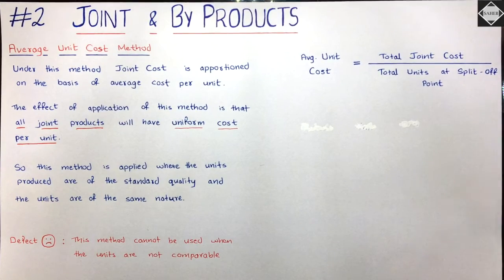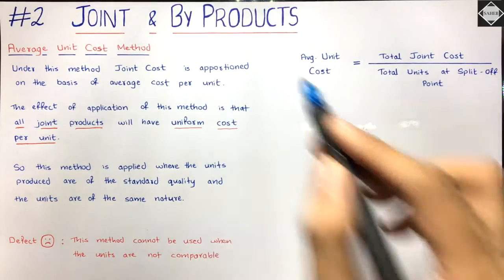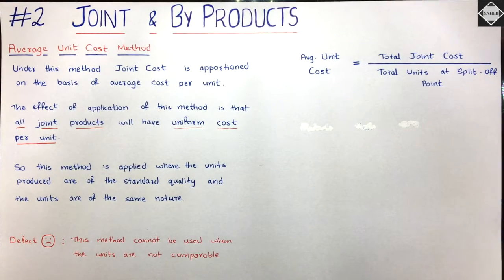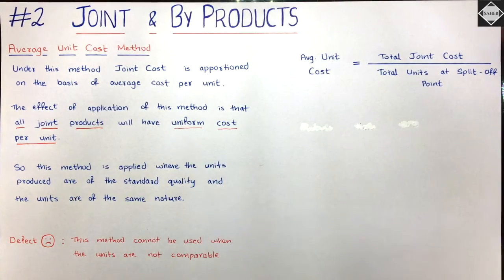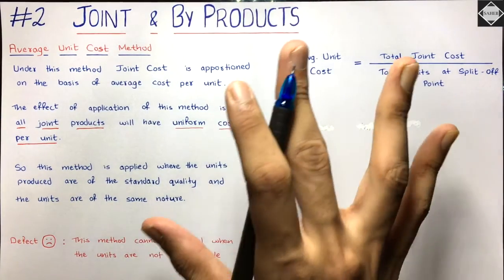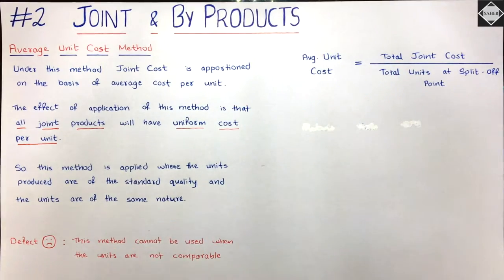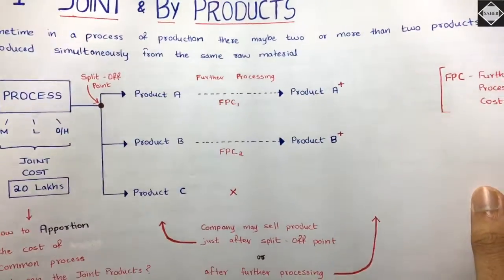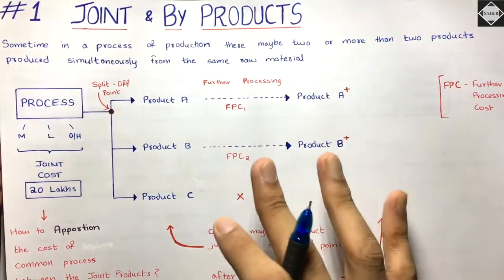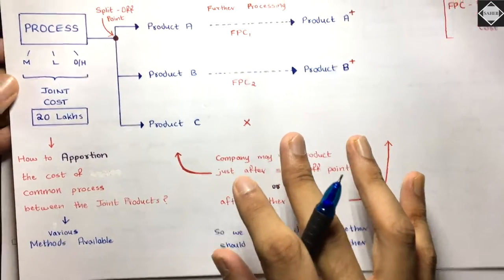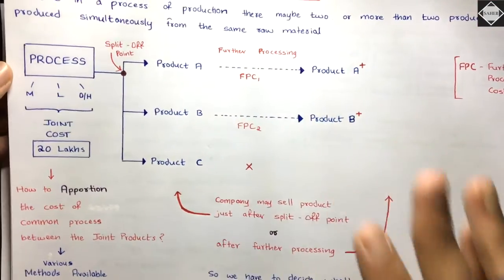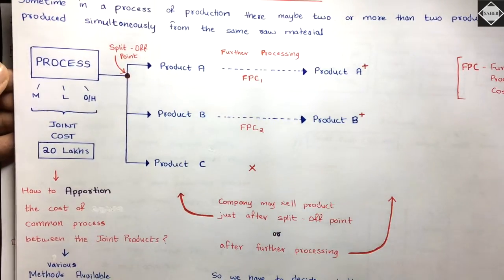Hi everyone, welcome back to Sahab Academy. Today in the second video of the Joint Products and By-product chapter, we are going to start with the second method — the Average Unit Cost Method. Before watching this video, please make sure you have watched the previous video where we discussed the entire concept of the chapter: apportionment of joint cost, the decision whether to further process or not, and the treatment of by-products — these are the three main things to understand.